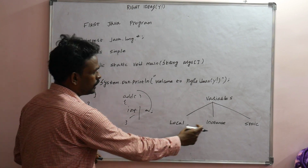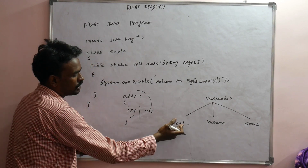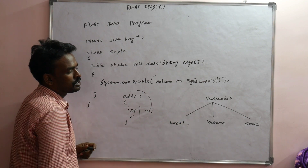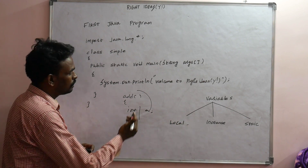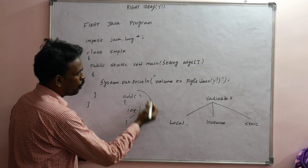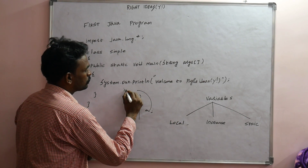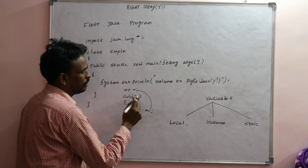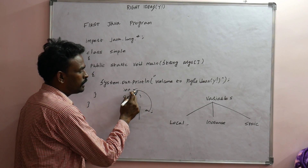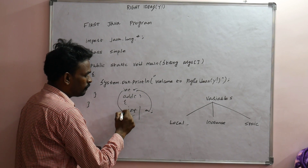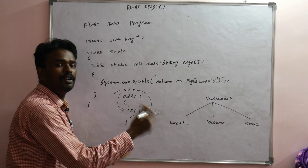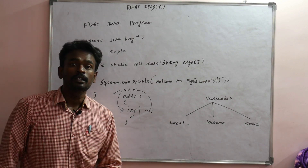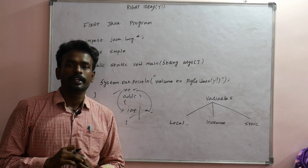The next one is instance variable. Unlike local variable, an instance variable is a global variable — it is created outside the function. For example, int x is created outside the function, and it can be used inside any function. That is an instance variable.